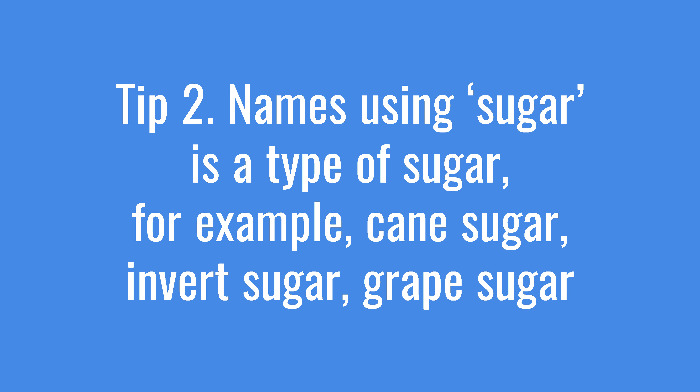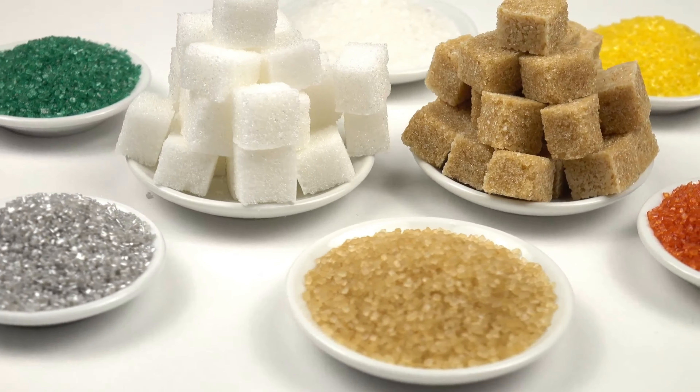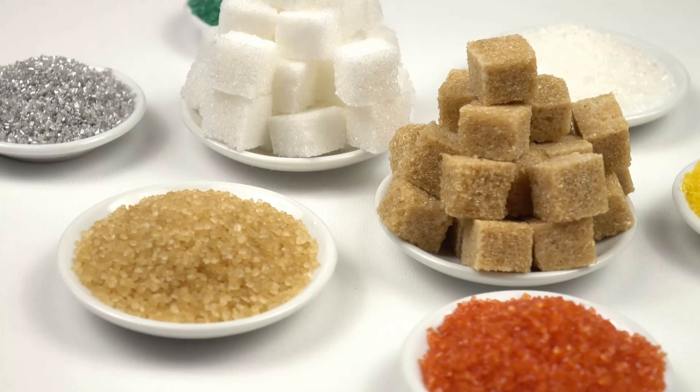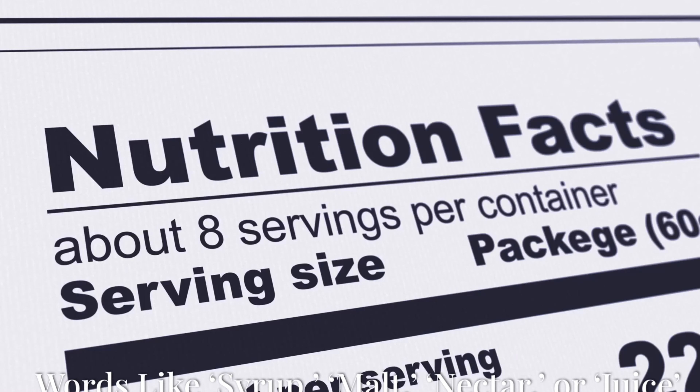Next, if you see the word "sugar" in the name, it's a type of sugar. Examples include cane sugar, invert sugar, and grape sugar.